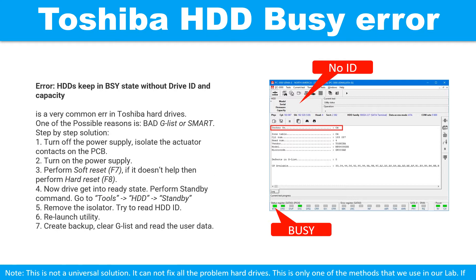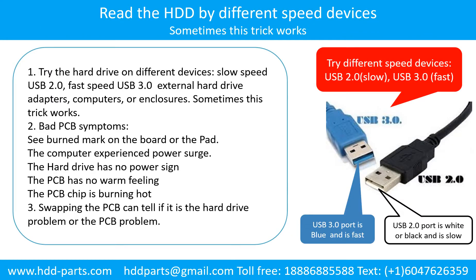Step 5: Remove the isolator. Try to read the hard drive ID. Step 6: Relaunch the utility. Step 7: Create backup, clear J-Dist and read the user data. There are some simple ways to recover data from a hard drive. One of them is to try to read the hard drive by different devices, like different external hard drive adapters, computers, or enclosures — because different devices use different ways to read a hard drive, and sometimes this trick works.